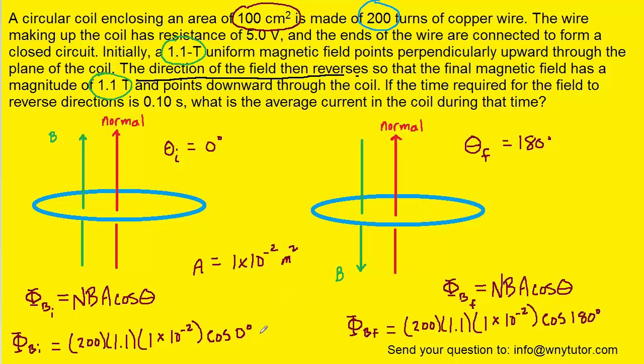So here are all the known values plugged in. When you compute this, you should get 2.2 Webers for the initial flux, and then over here, for the final flux, we should get negative 2.2 Webers. Same magnitude, but just opposite sign.